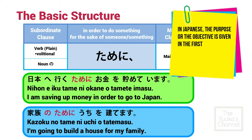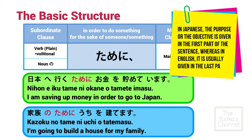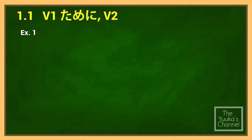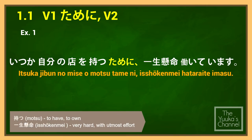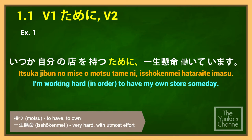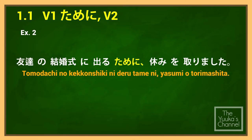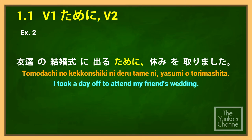In Japanese, the purpose or objective is given in the first part of the sentence, whereas in English it is usually given in the last part. More examples: Itsuka jibu no mise wo motsu tame ni issho kenmei hataraite imasu — I am working hard to have my own store someday. Tomodachi no kekkon shiki ni deru tame ni yasumi wo toremashita — I took a day off to attend my friend's wedding.